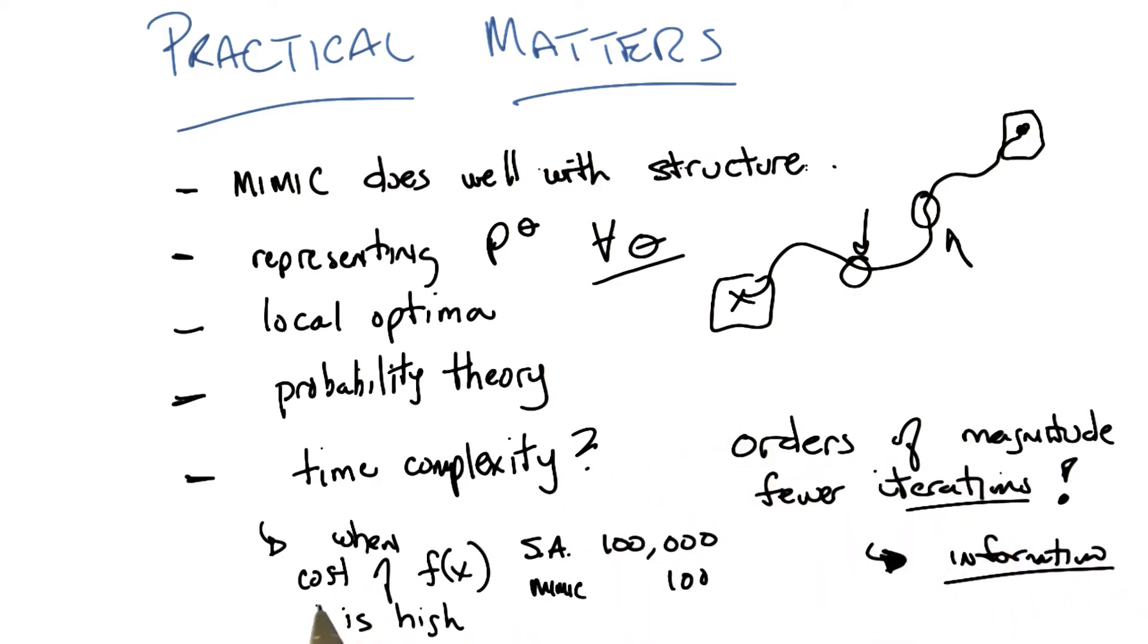So MIMIC tends to work really well when the cost of evaluating your fitness function is high. So it's really important that I only have to take 100 iterations if every single time I look at a fitness function and try to compute it for some particular x, I pay some huge cost in time.